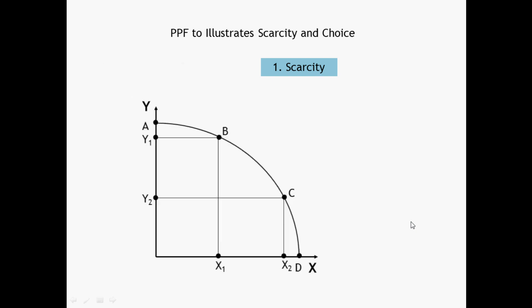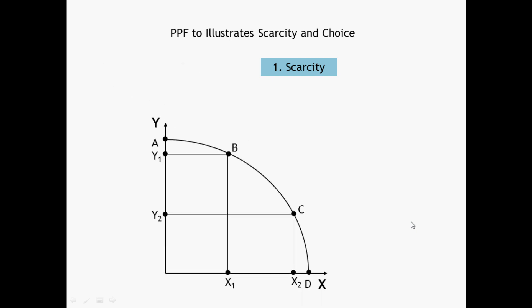Let us now turn to explain scarcity and choice using Production Possibility Frontier. We are starting with scarcity. Scarcity means deficiency of resources. From the study of PPF, we have come to know that any point beyond the production possibility frontier, like F, is unattainable because of deficiency of resources.